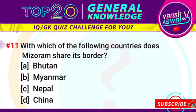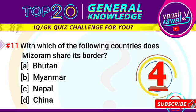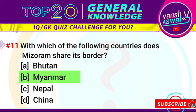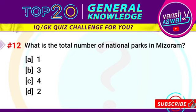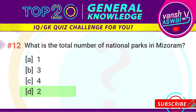Question number 11: with which of the following countries does Mizoram share its border? The right answer is Myanmar. Question number 12: what is the total number of national parks in Mizoram? The right answer is two national parks.